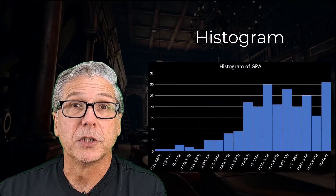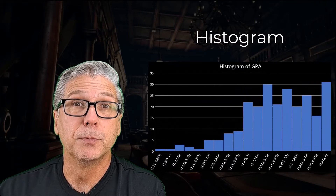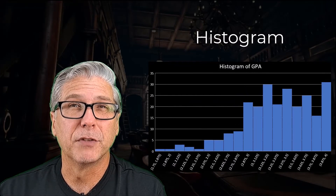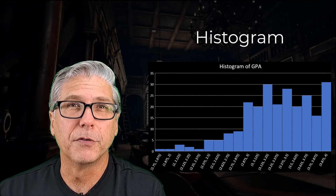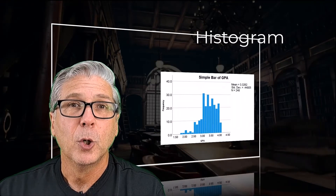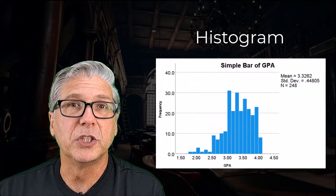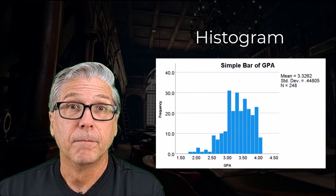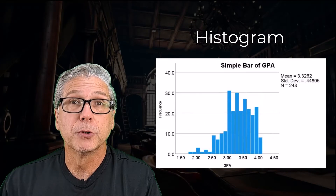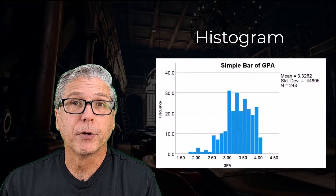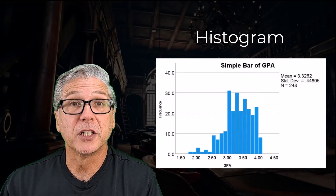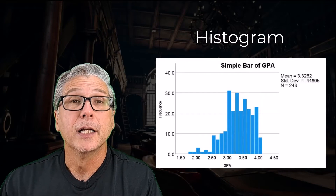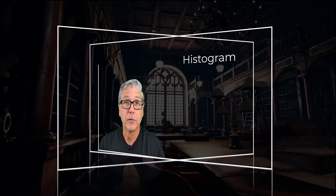While the bar graph shows how the data is grouped on the graph and we get a sense of the shape of the data, we do lose the individual values of the data. Because they're grouped together, we're never going to be able to focus on a single value from our data set in the bar graph.